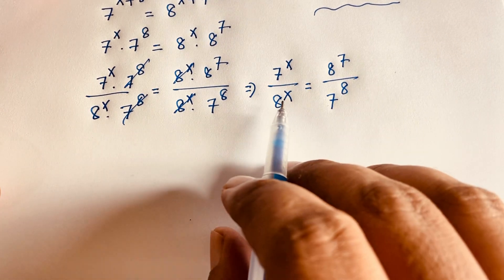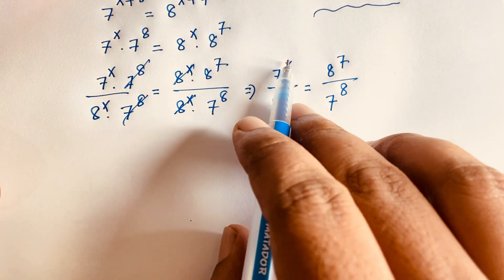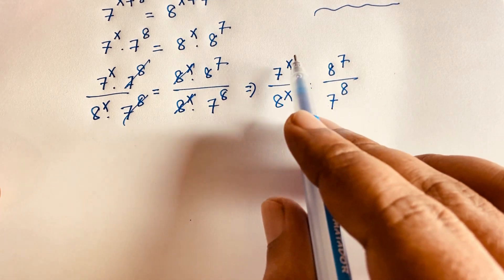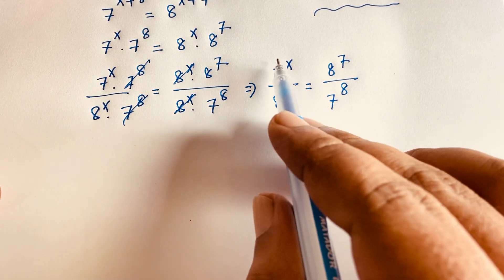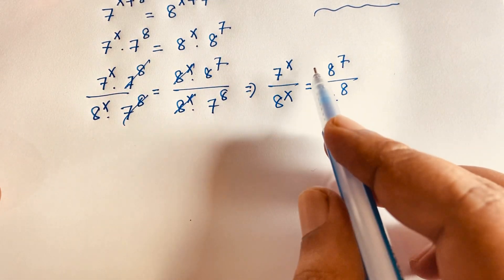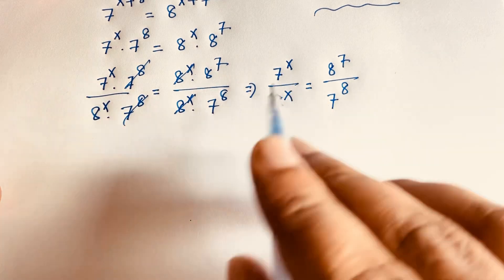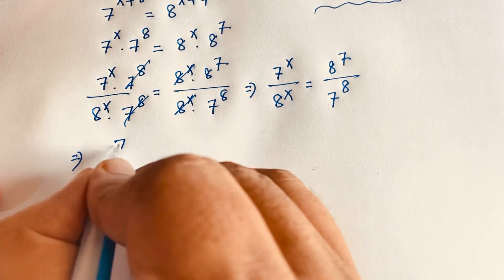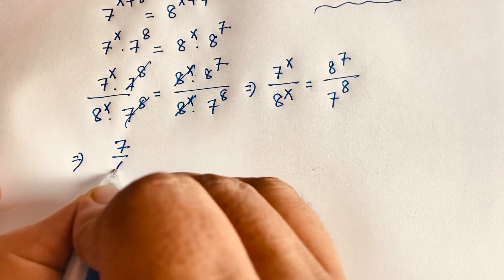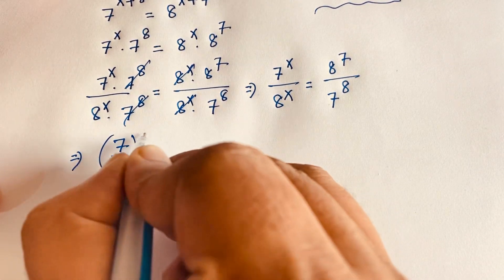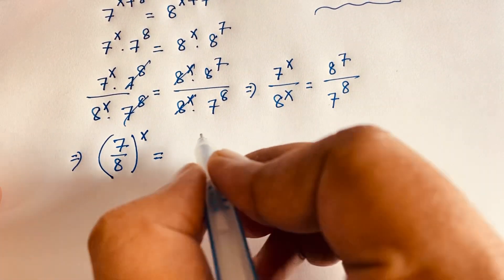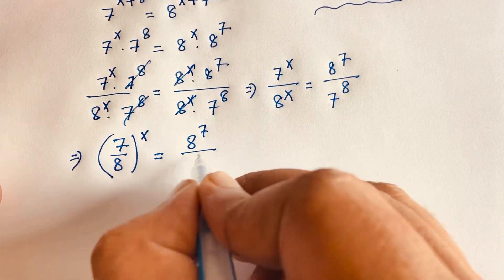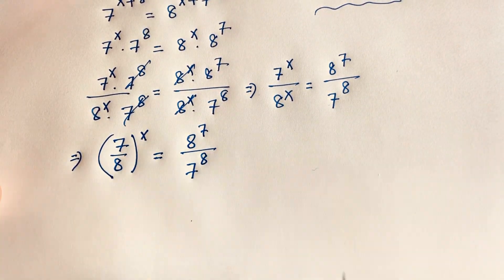We know the exponential law: a to the power n over b to the power n equals a over b, whole to the power n. According to this law, this equation becomes 7 over 8, whole to the power x, is equal to 8 to the power 7 over 7 to the power 8.